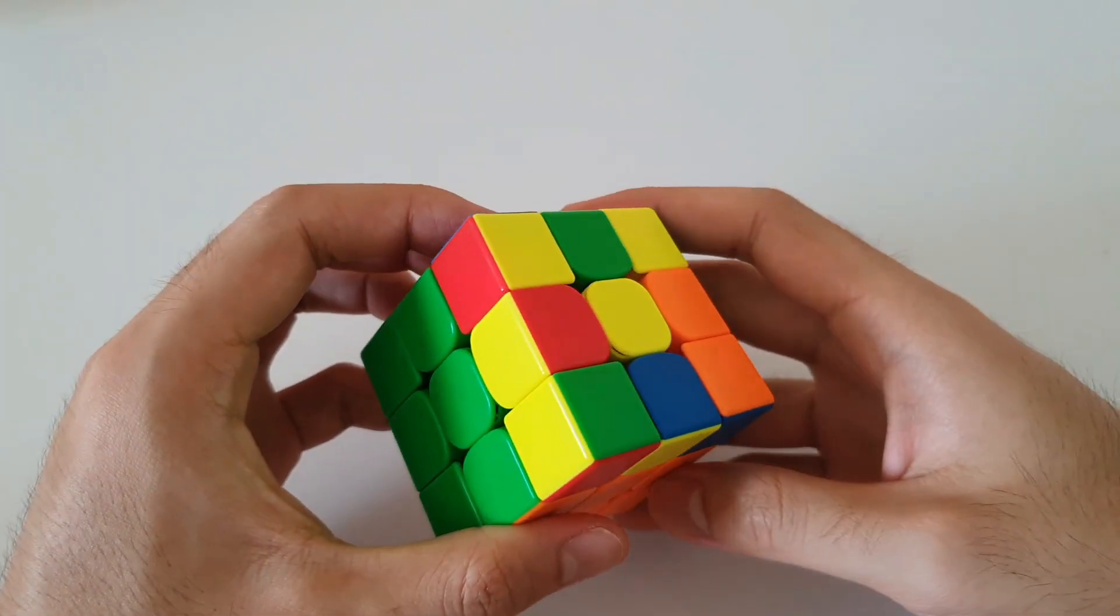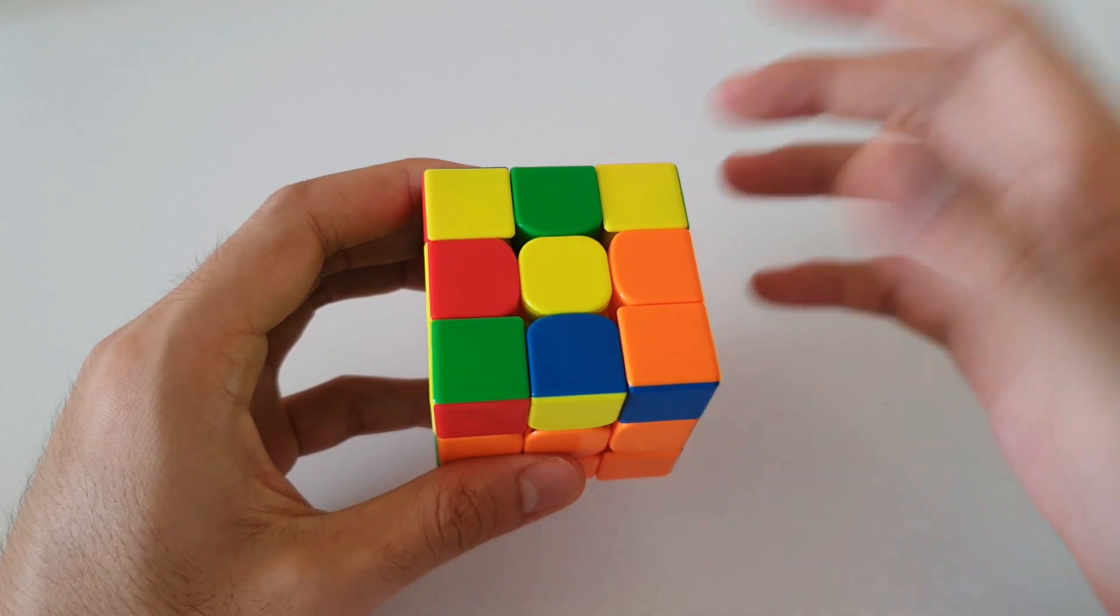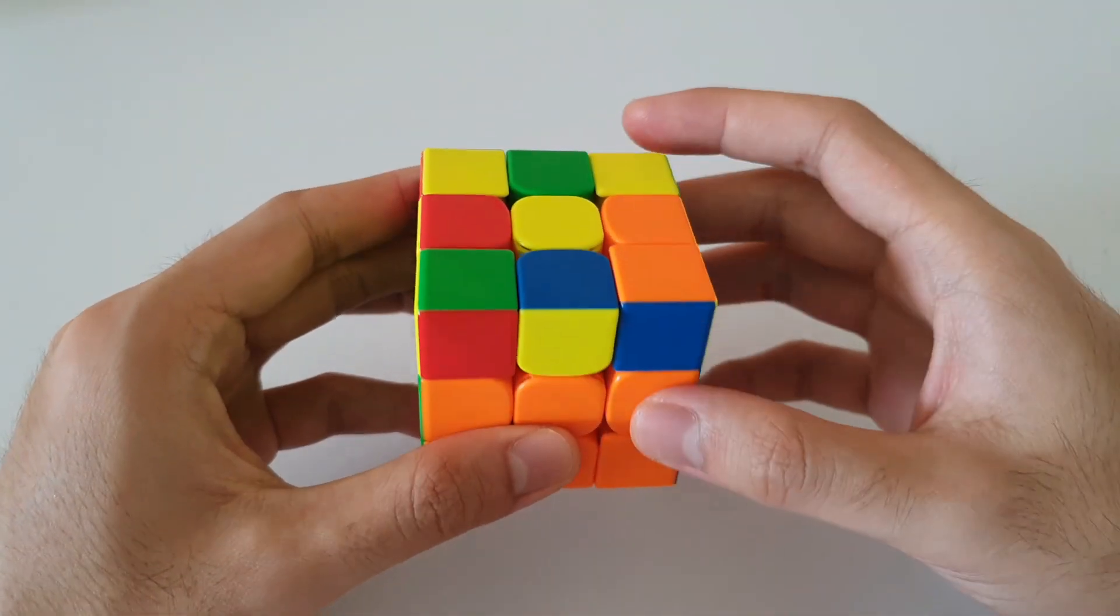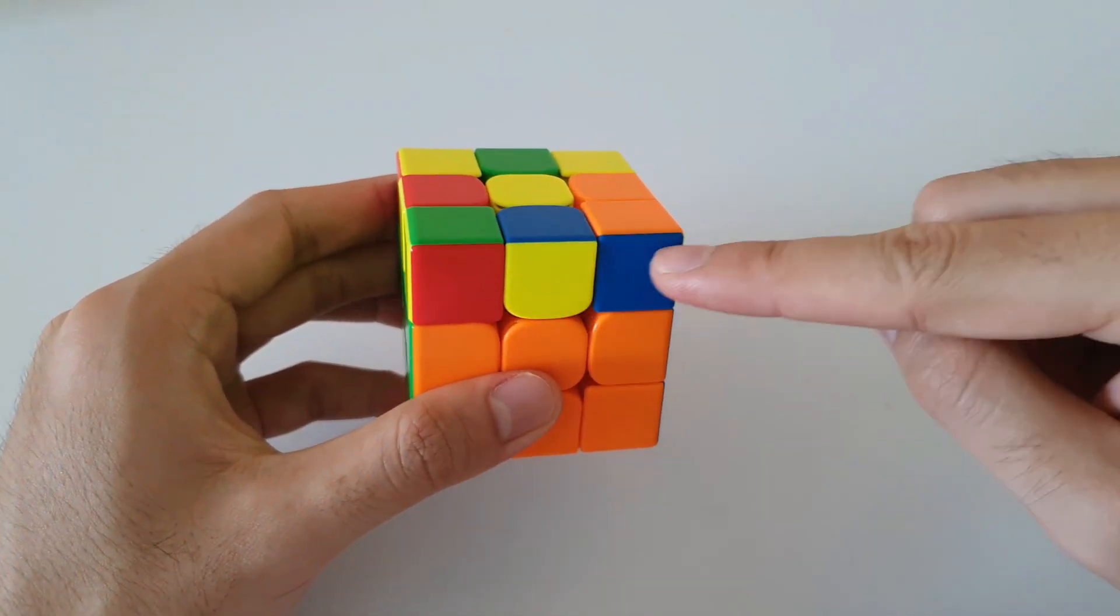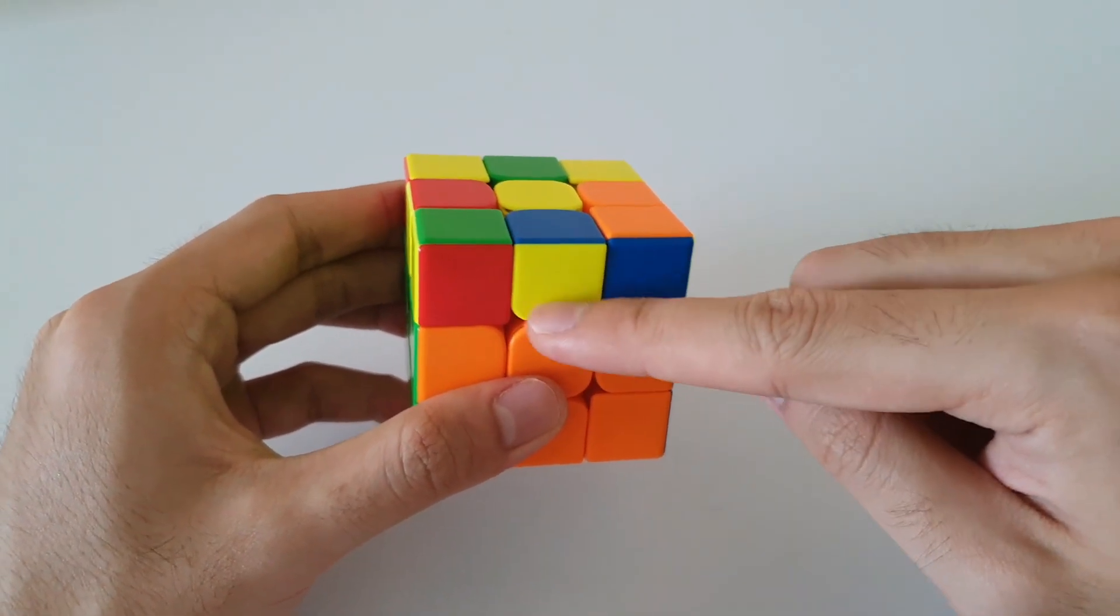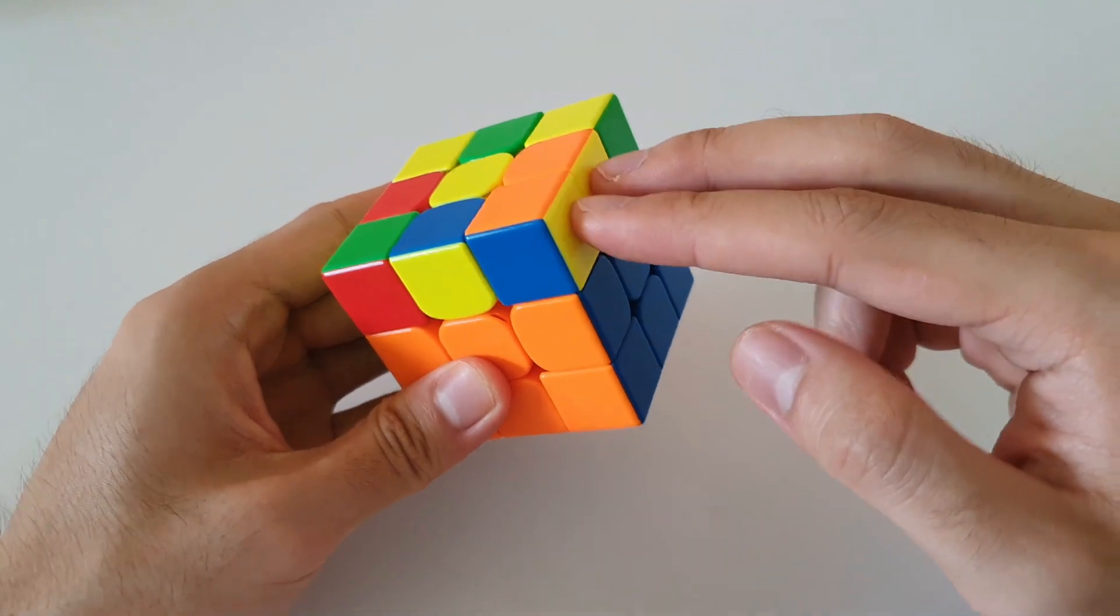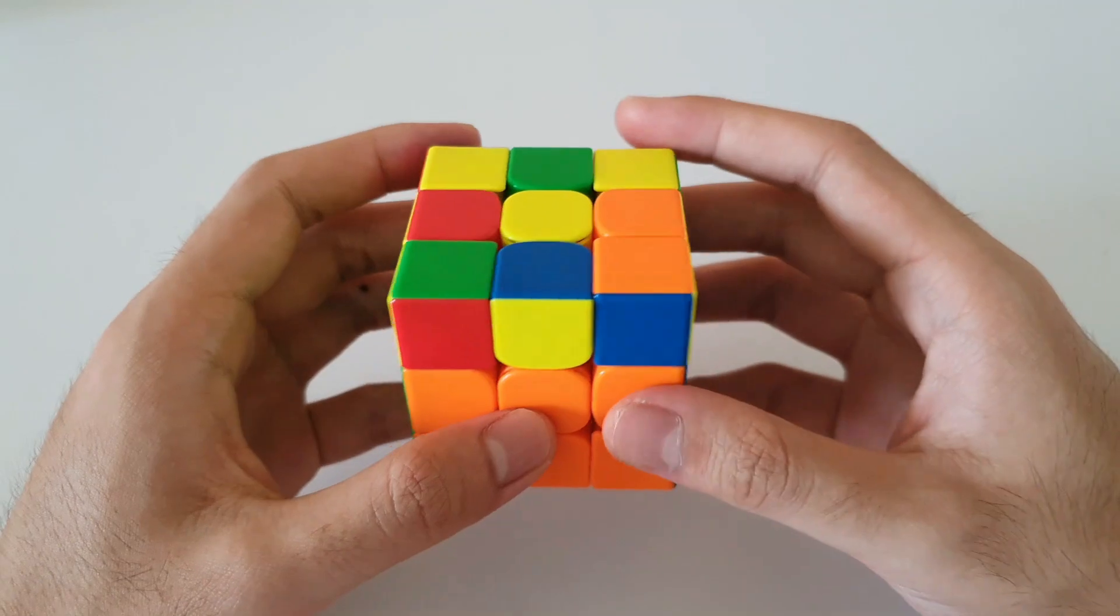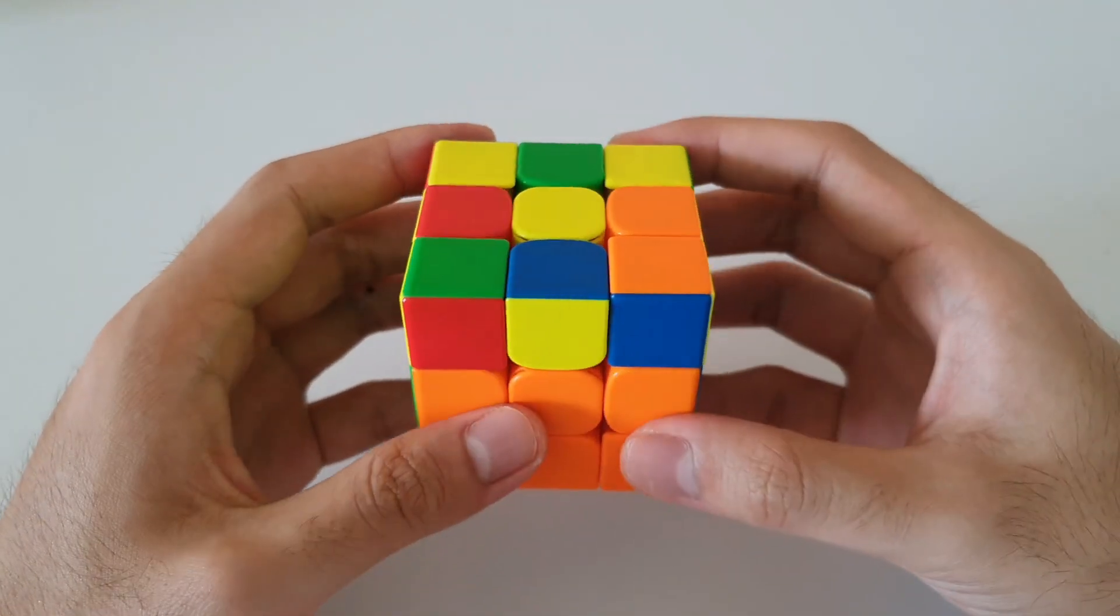Next OLL case is this one here. Once again, similar to the previous one where we have the two back corners oriented. Now instead of the 3x1 bar at the front, we now have a single yellow edge at the front with two of these 2x1 bars on either side. So for this algorithm, once again, fairly straightforward.